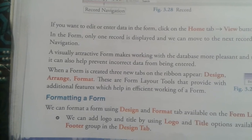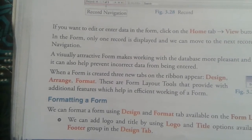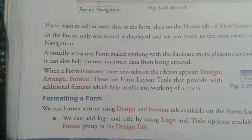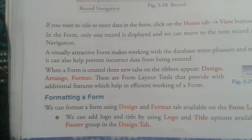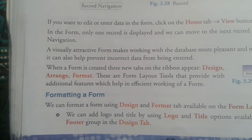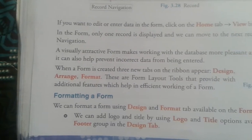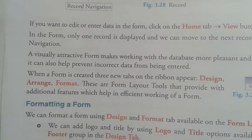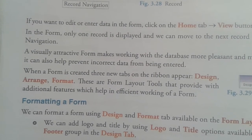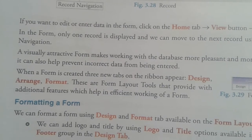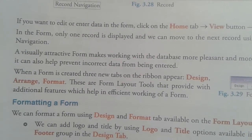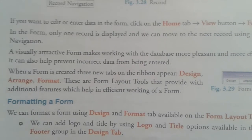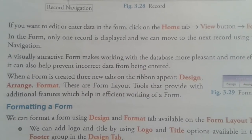To create a report on the table Student: select table Student from the navigation pane, then on the Create tab in the ribbon, in the Report group, click on Report. All the records are displayed automatically in tabular format with an appropriate title, date and time, and page number — this happens automatically because the system has been designed by software engineers. When a report is created, four new tabs appear on the ribbon: Design, Arrange, Format, and Page Setup.